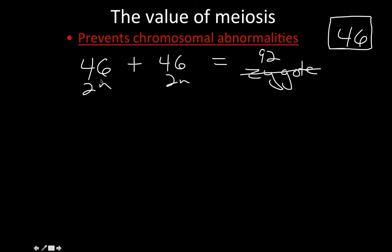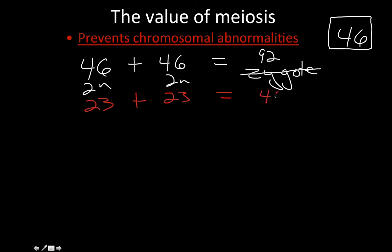What meiosis does is take that number of 46 and halve everything. Mom donates 23 chromosomes, dad donates 23 chromosomes, so our zygote now has 46 chromosomes — the correct number — and the zygote is happy and will hopefully develop completely normally.